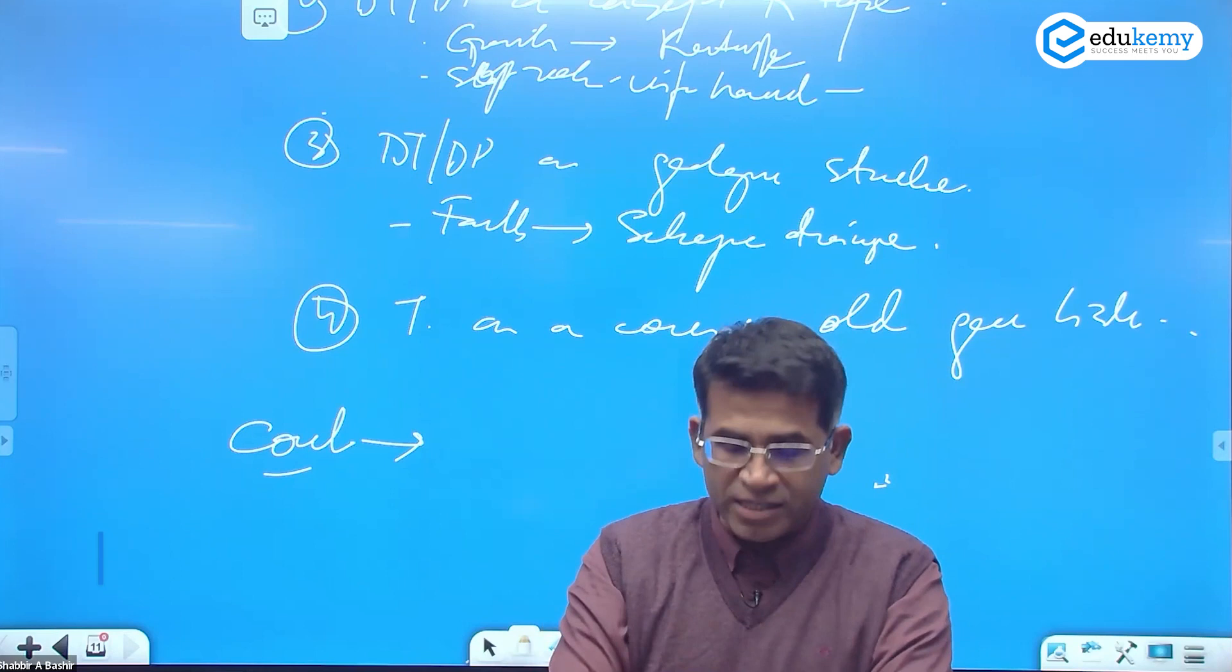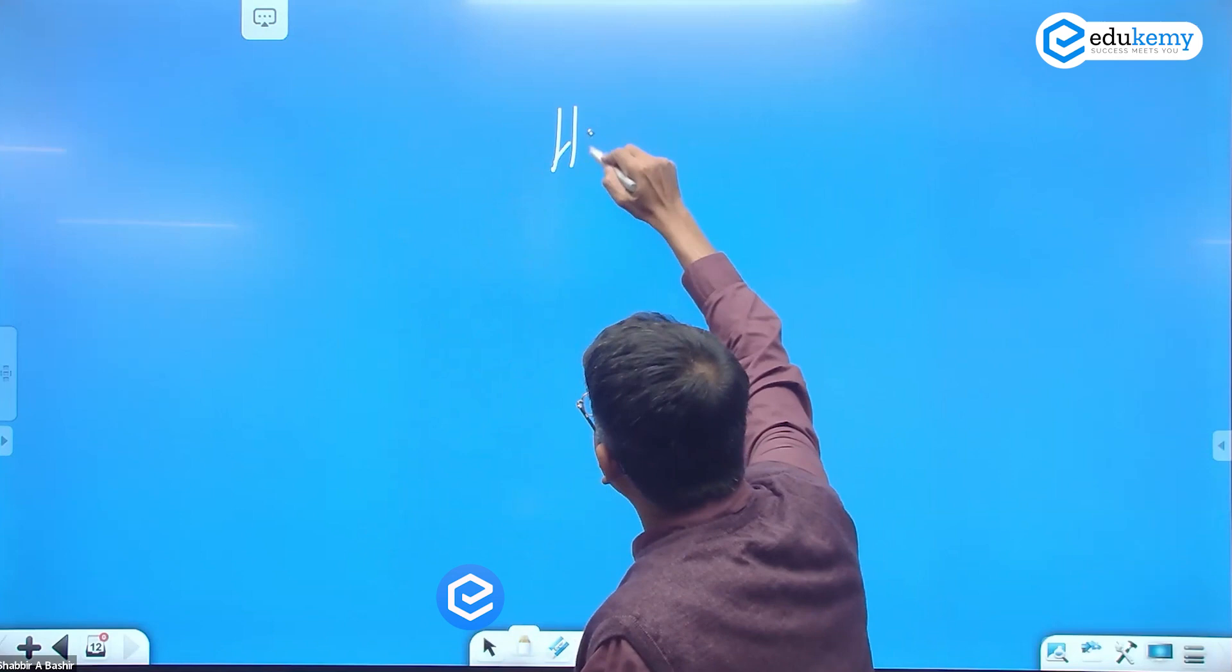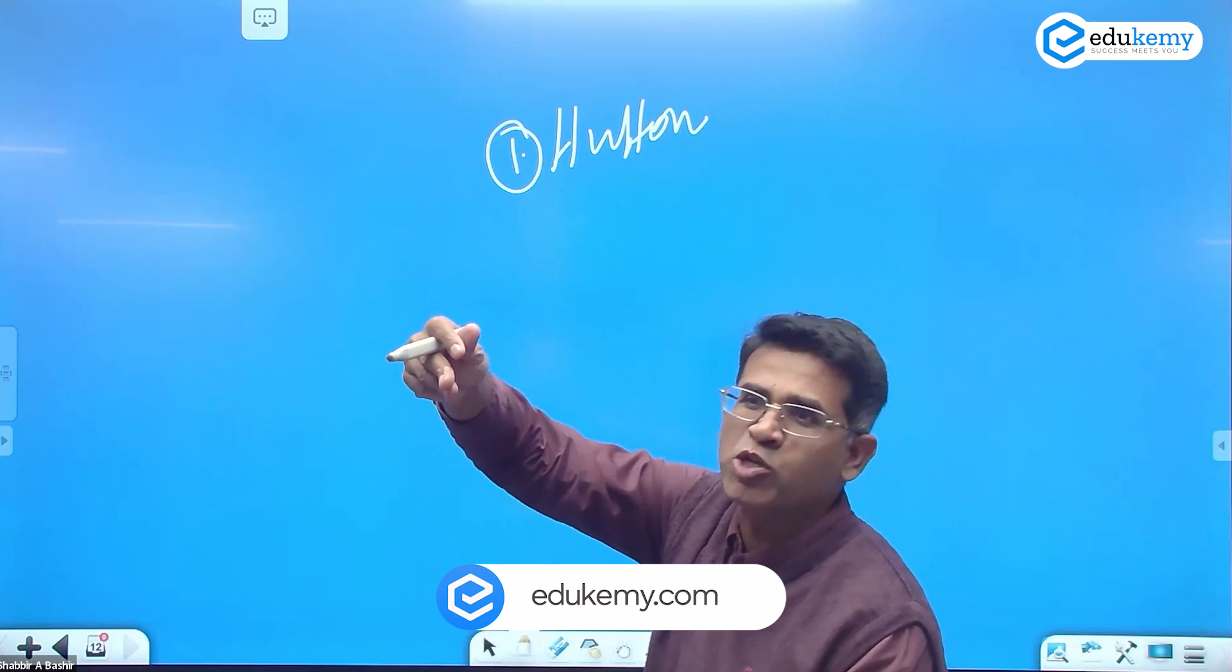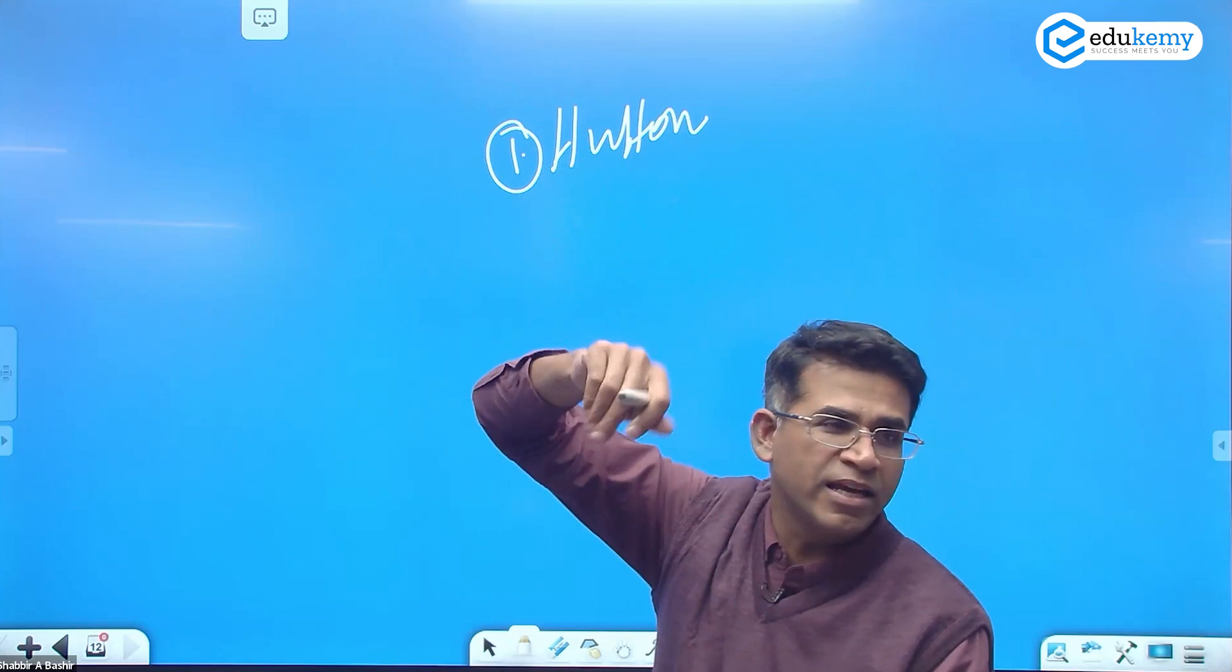Let's discuss the contributions of the European school of geomorphology. Where do you want to start? Who do you want to start with? Hutton - he introduced the principle of uniformitarianism. He's a Scottish man. Tell in two, three lines what was his contribution. How Davis uses it - the basis of historical reconstruction approach.